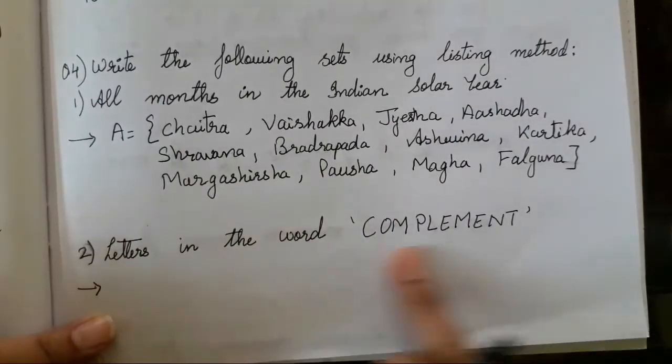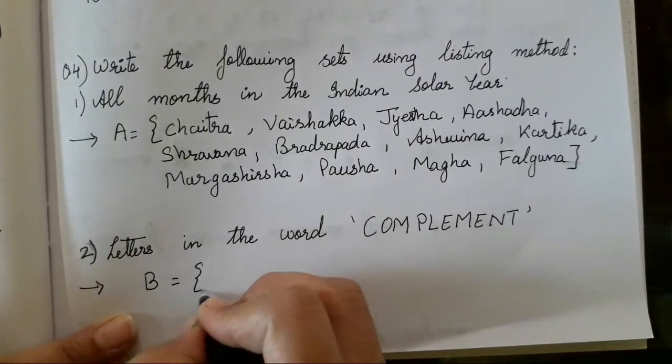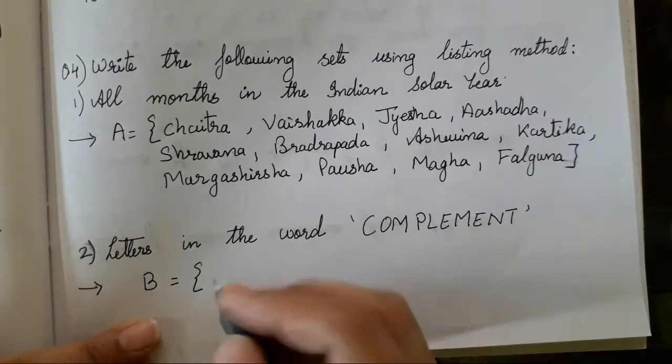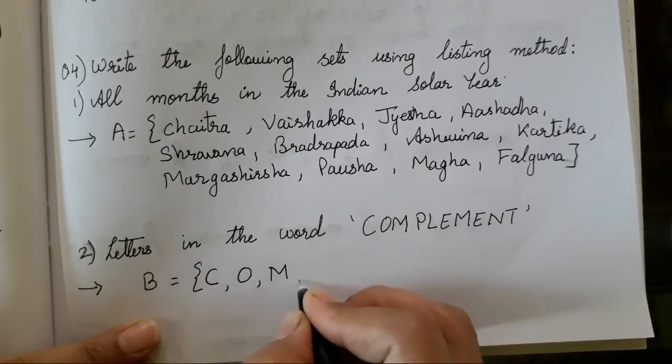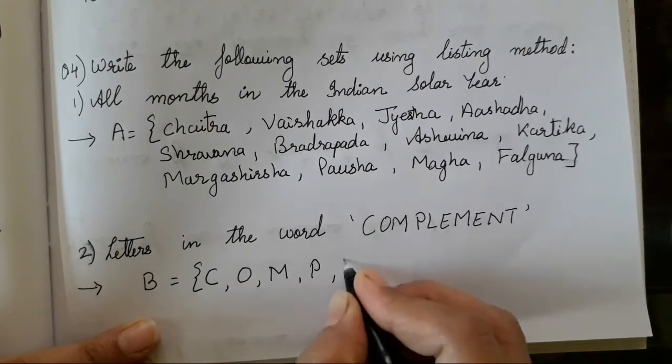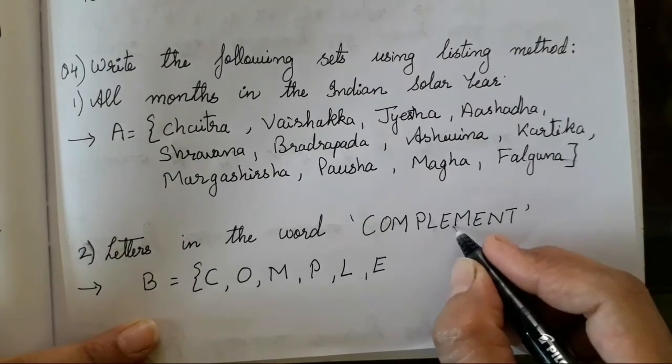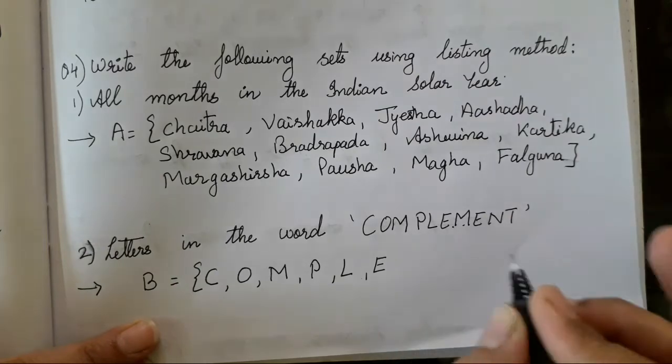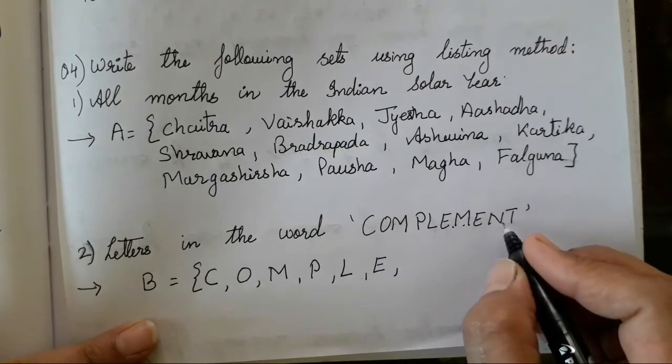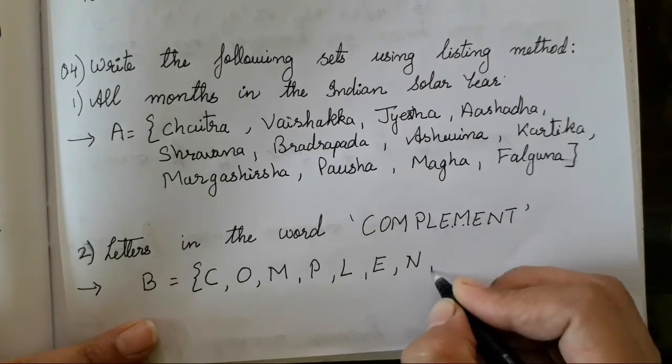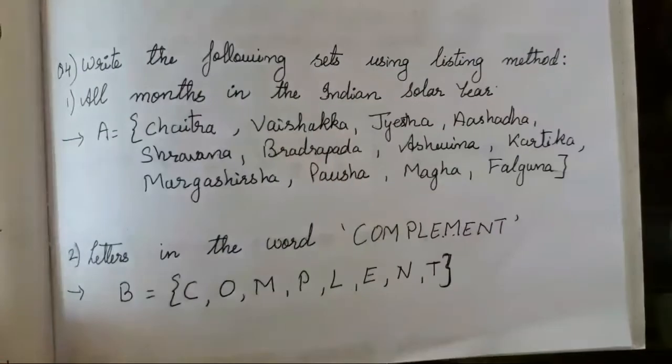Now next question is letter in the words complement. So you all have to take B, in which the elements we have to write, that is C, then we will take O, M, P, L, E. Now see, after over here, M is repeating again. So we don't have to take the repeated elements. E again, it's repeating. So we don't have to take it. N, we have to take it. And T. So whichever element is repeating, we don't have to take them.